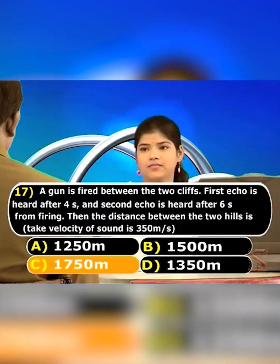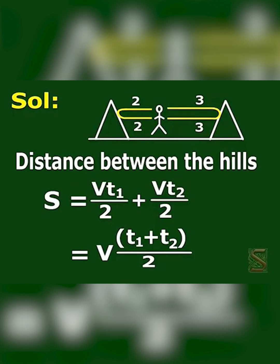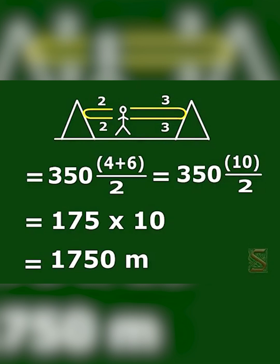Option C is the right answer. The distance between the two hills is given by: s = v × (t1 + t2) / 2. Given v = 350 m/s, t1 = 4 seconds, and t2 = 6 seconds, substituting these values gives s = 1750 meters.